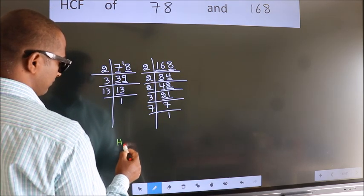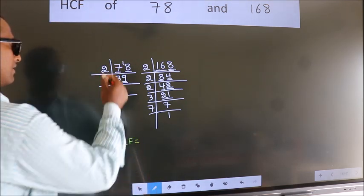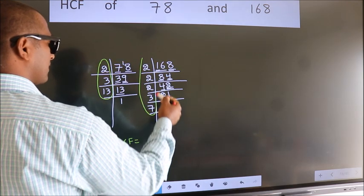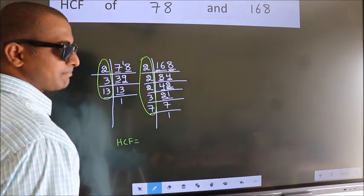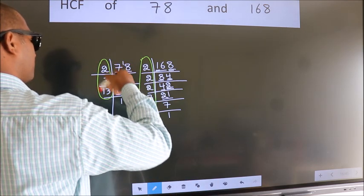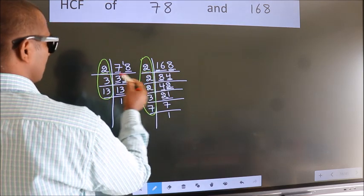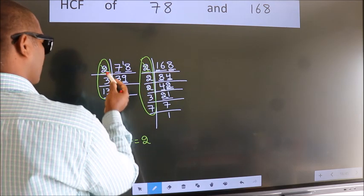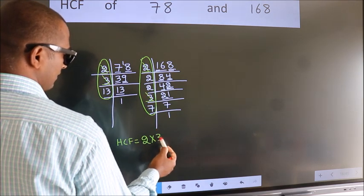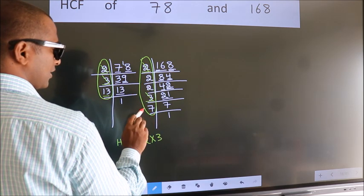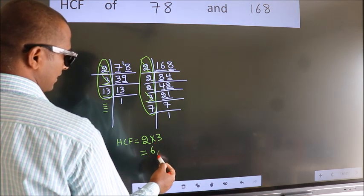Therefore our HCF is the product of the numbers which should be present over here and also here. Here and here. So now let us find the numbers which should be present here and here. Starting with the number 2. Do we have 2 here? Yes. So cut 2 right here. Next number 3. Do we have 3 here? Yes. So cut 3 right here. Next number 13. Do we have 13 here? No. No more numbers have been left out. So our HCF is 2 into 3. 6 is our HCF.